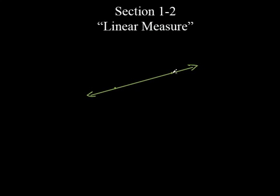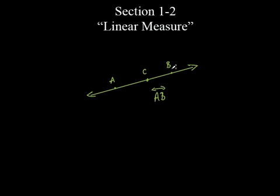So how did we label the line? We labeled it with at least two points. A line has at least two points, and we label it with exactly two points. So if I have two points on here, even if I put a C right here, I can name this several different things. I could name it line AB, with arrows on it. I could have named it AC, CB. I could have gone backwards and named it CA, BC, or BA. So you actually have six different ways you could have named this line.